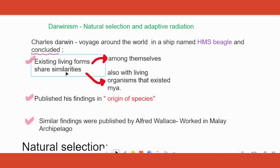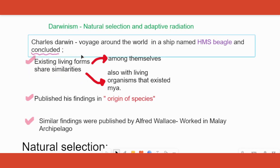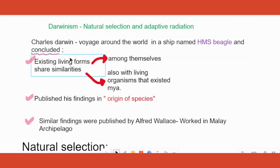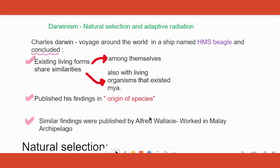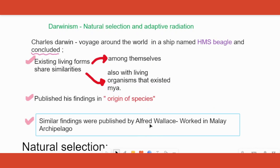First, Darwin found there is similarity between organisms that exist right now — for example, a dog and a cat both exist today and share similarities. He also found similarities between organisms that exist now and previously existing organisms. He published all his findings in a book called Origin of Species.